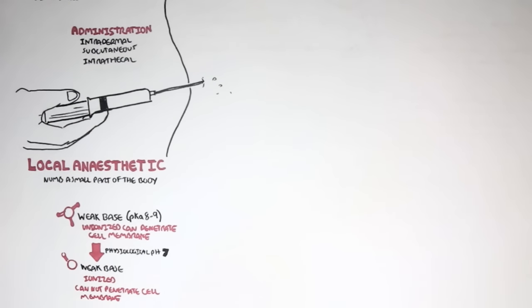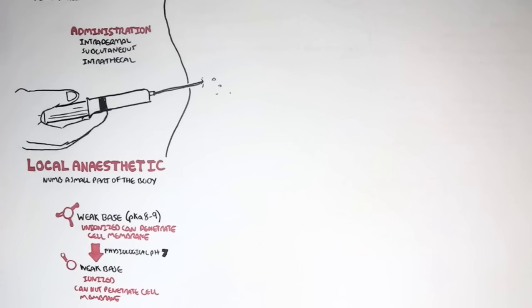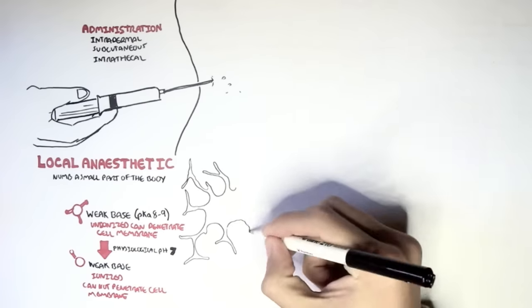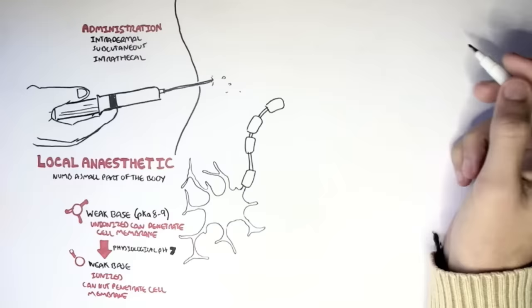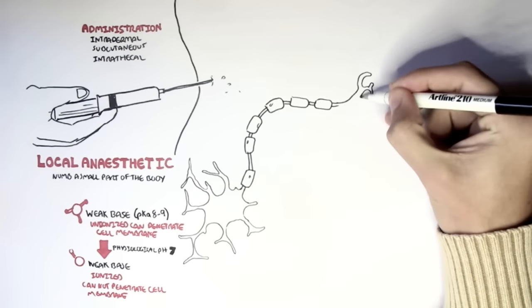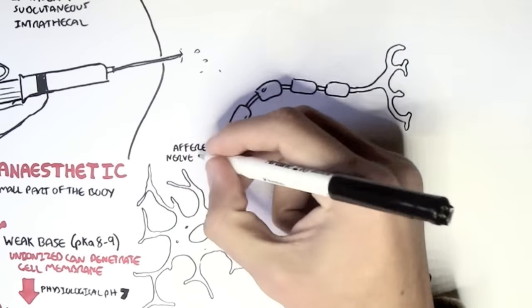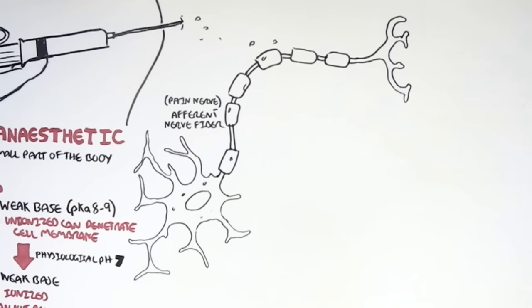So for example, if we were to administer a local anesthetic to a person suffering from high levels of acids in their body, the local anesthetic will be ionized very quickly and so is not very effective. So this is an important concept to know and we'll learn more about it during this video. So how do local anesthetics work? Well, they numb a small part of the body by particularly working on the nerves, especially the afferent nerve fibers, the pain fibers, by preventing the pain fibers to send pain signals to the brain.